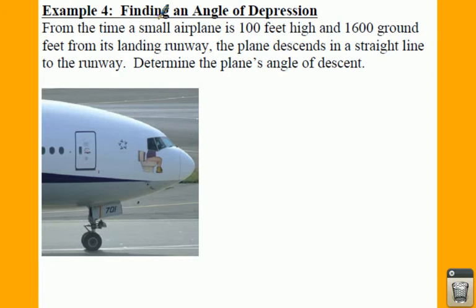From the time a small airplane is 100 feet high and 1,600 ground feet away from its landing runway, the plane descends in a straight line to the runway. Determine the plane's angle of descent.